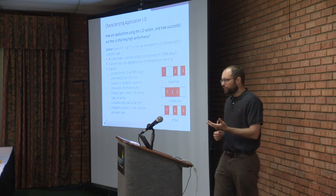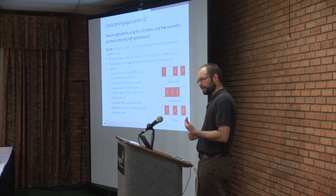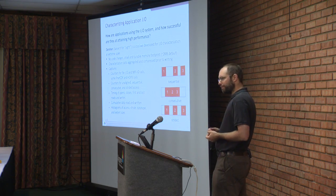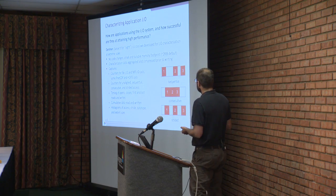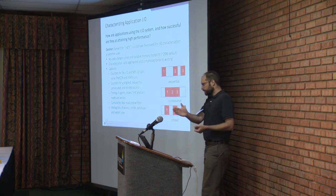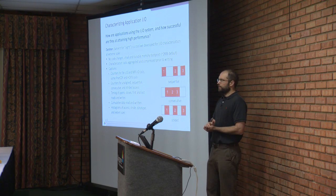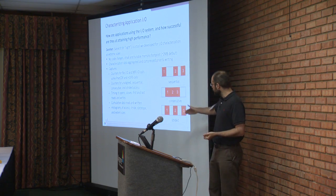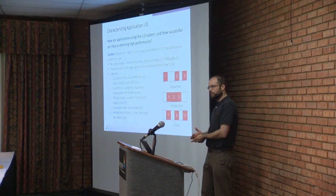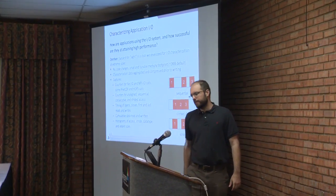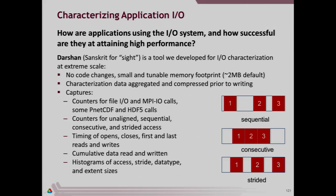When we say characterization — Darshan is a Sanskrit word for sight — it's a way of looking into the application and seeing what's going on. We have the idea of sequential I/O where each process's I/O happens one offset after the other, everything getting bigger. Or maybe it's consecutive where each block happens right after the next one. Or there's a regular stride as if you're reading out of a matrix. We can capture things like that.